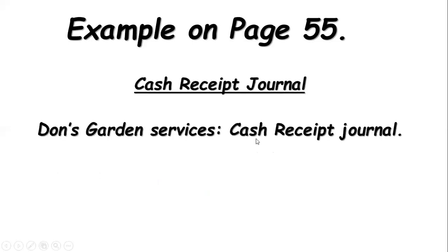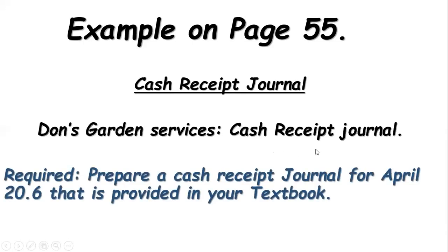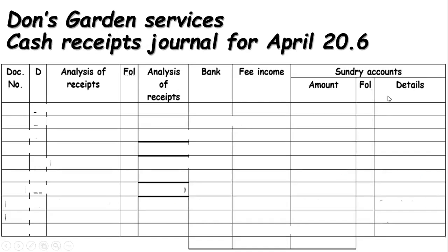We are going to look at the example in your books on page 55. So what we are going to be looking at is the cash receipt journal — Don Bruno Garden Services cash receipt journal. Required: prepare a cash receipt journal for April 2016, as provided in your textbook. This has been done for you as an example, so I'm going to walk you through to show you how it was done.